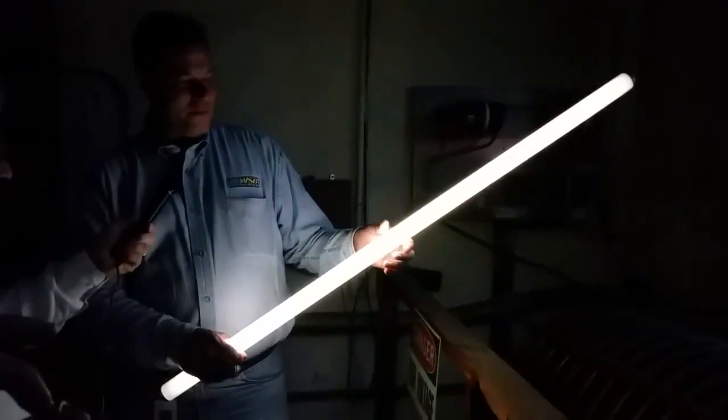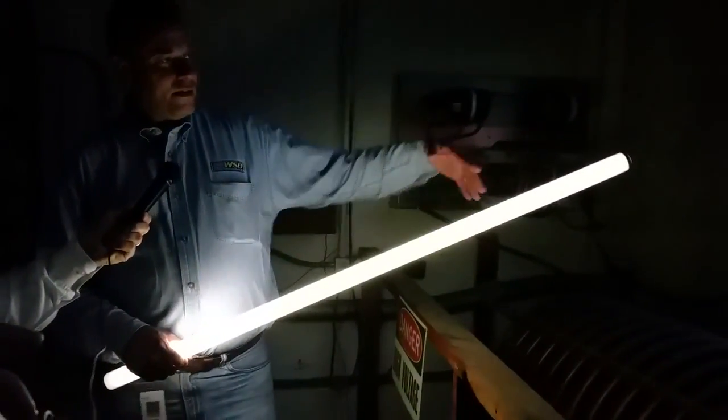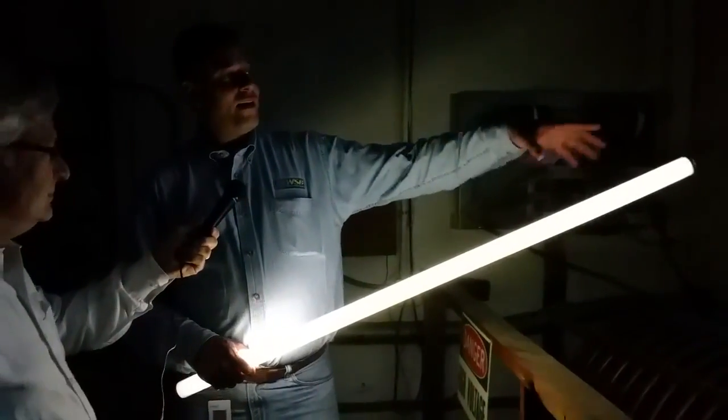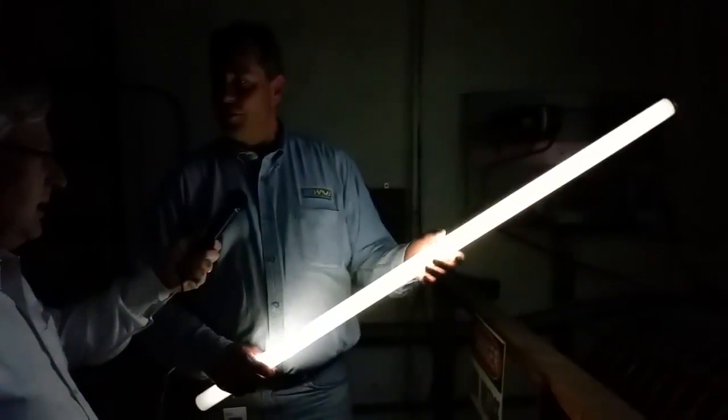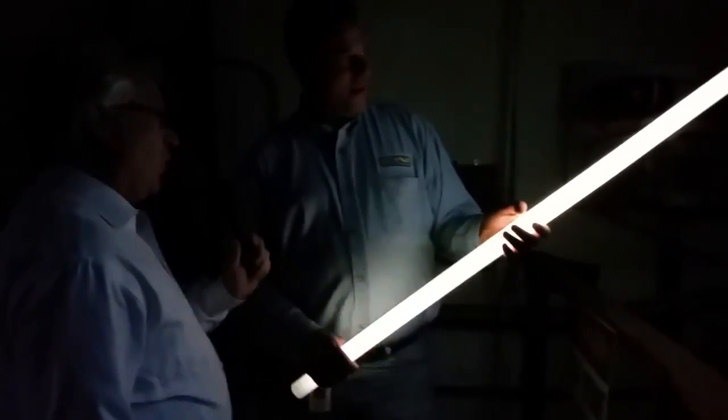Well, a fluorescent bulb works by stimulating the gas inside the bulb. And essentially, the voltage in the air is stimulating the gas just like it would if it was in a socket.